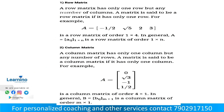First types of matrices — first one: row matrix. A row matrix has only one row but any number of columns. A matrix is said to be a row matrix if it has only one row. For example, a 1 by 4 matrix is a row matrix.